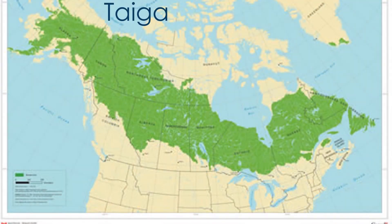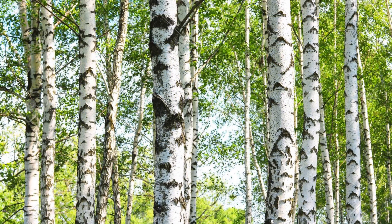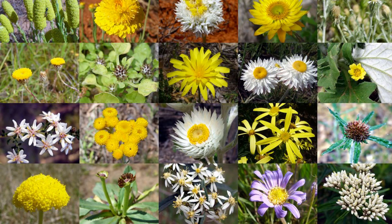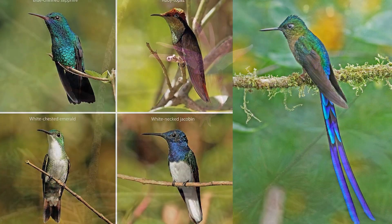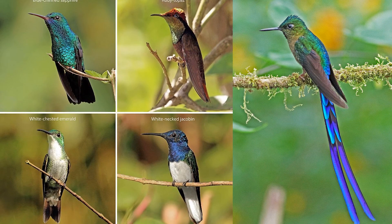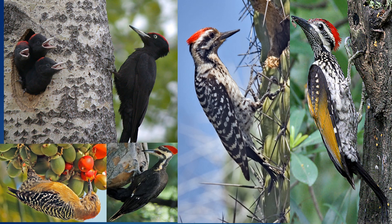Taiga, also called boreal coniferous forest, is south of the tundra and covers more than half of Canada. Boreal coniferous forest is dominated by pine, spruce, and fir. As you move further south, you may see broadleaf trees like white birch and balsam poplar. You will also see some beautiful flowers like asteraceous plants, crucifers, and orchids.